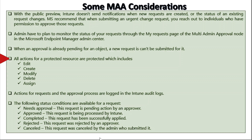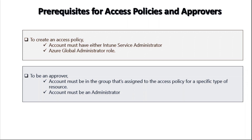All actions for a protected resource are protected, which includes editing, creating, modifying, deleting, and assigning a policy. Actions for requests and the approval process are logged in the Intune audit logs. The following status conditions are available for requests: Needs Approval, meaning the request is pending action by an approver; Approved, meaning the request is being processed by Intune; Completed, meaning the request has been successfully applied; Rejected, meaning the request was rejected by an approver; and Cancelled, meaning the request was cancelled by the admin who submitted it.